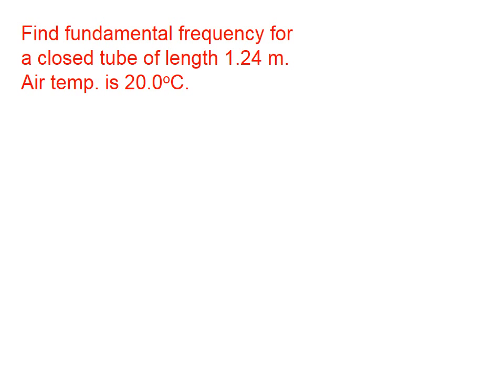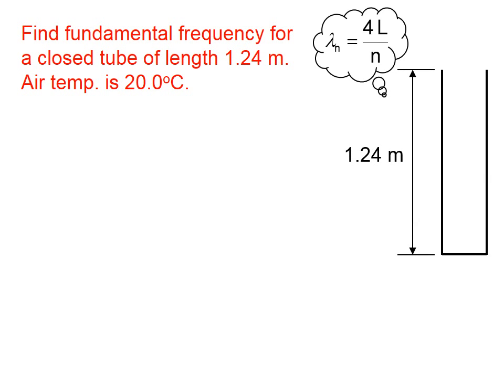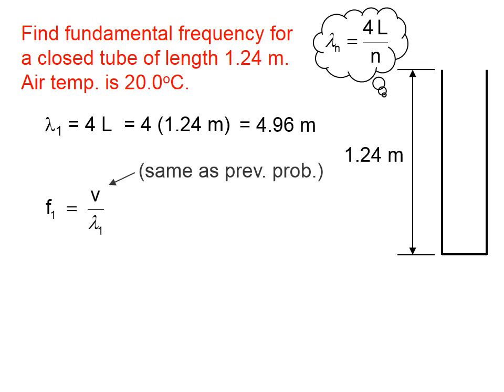Let's do the same problem, except this time we'll have the tube closed. The governing equation is now 4L/n instead of 2L/n. So the fundamental wavelength will be 4 times 1.24 meters, which turns out to be 4.96 meters. The air temperature is still the same, so 343 meters per second applies here as well. When we close this tube, the fundamental frequency changes.